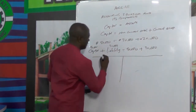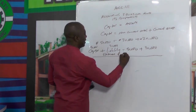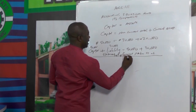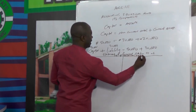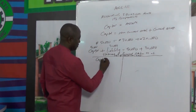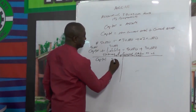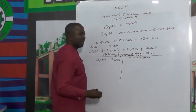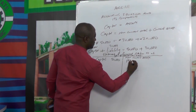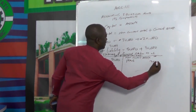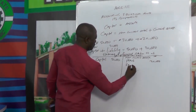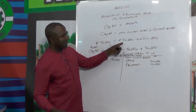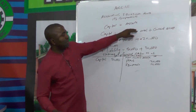Assuming we have a statement of financial position that looks like this — Statement of Financial Position as at 31st of December 2021. We have our capital. First, we said our capital is 50,000. Then we have our non-current assets. Assuming we have plants at 20,000, and equipment at 10,000. You can see that 20,000 plus 10,000 gives us 30,000, which represents our non-current assets.